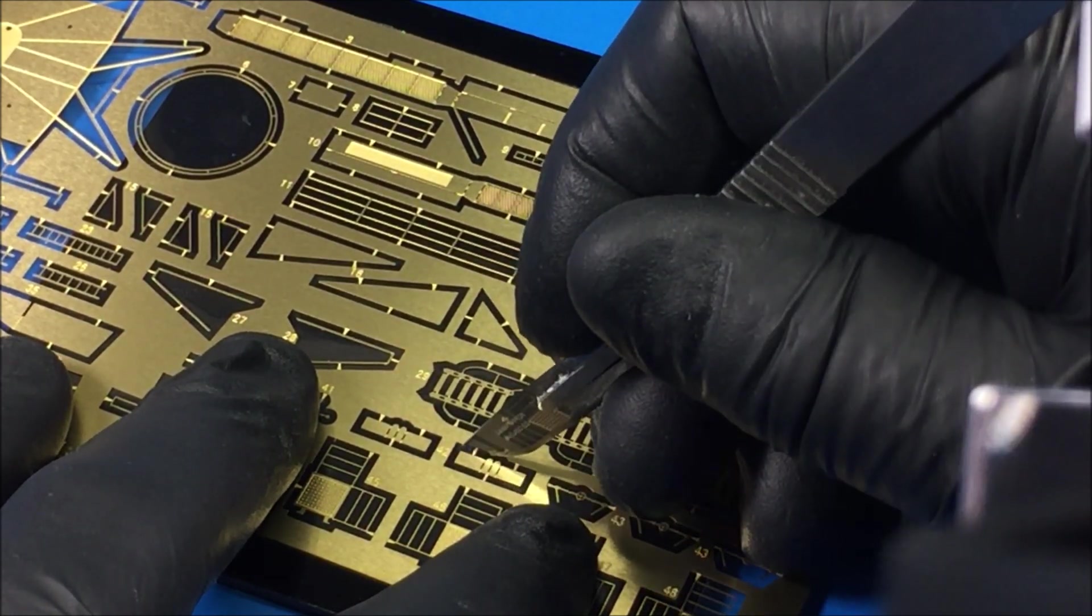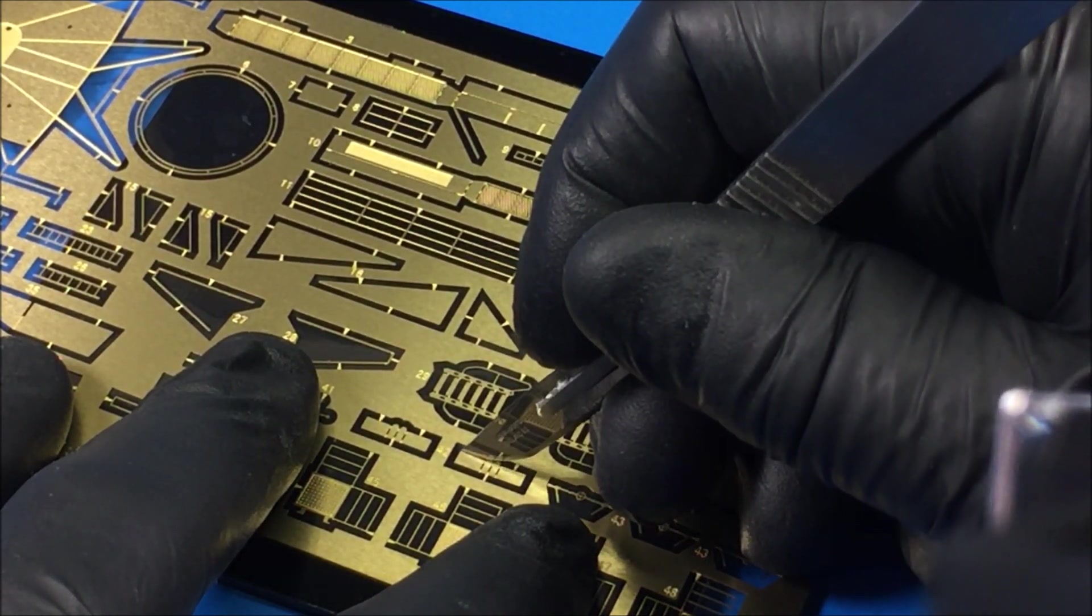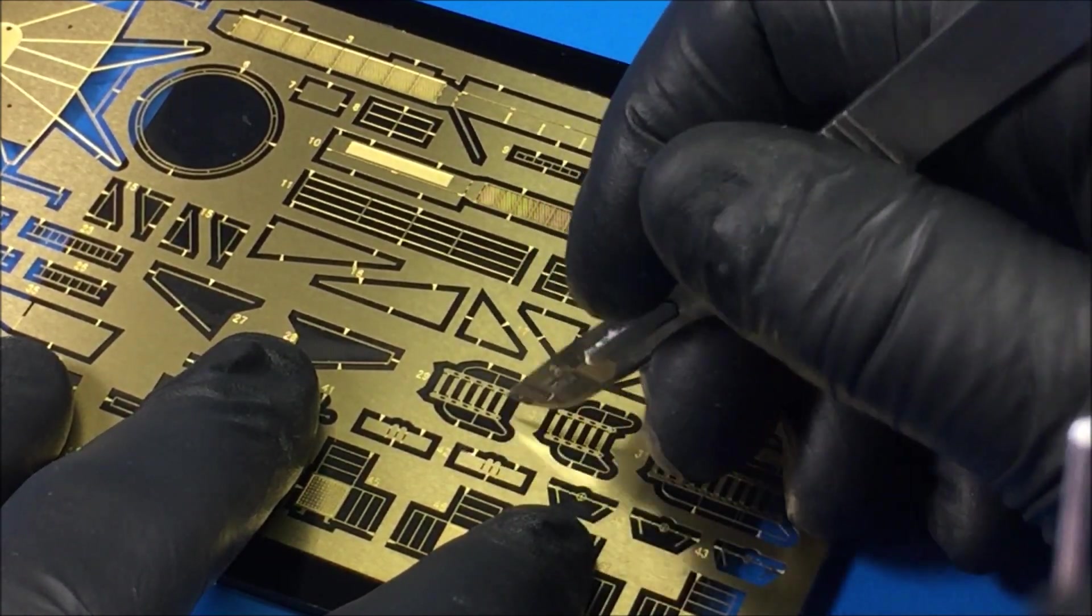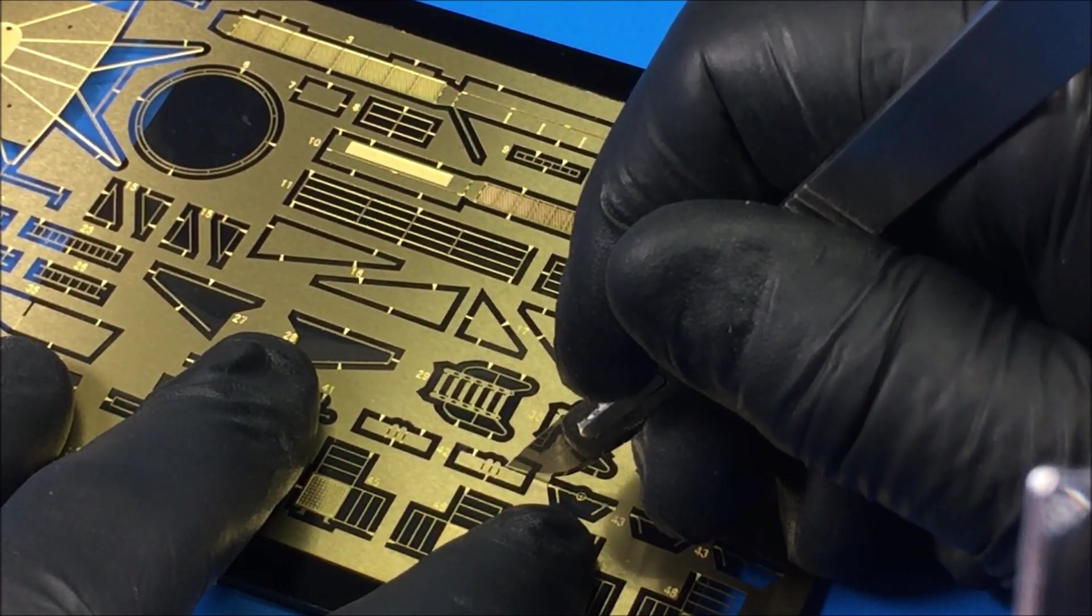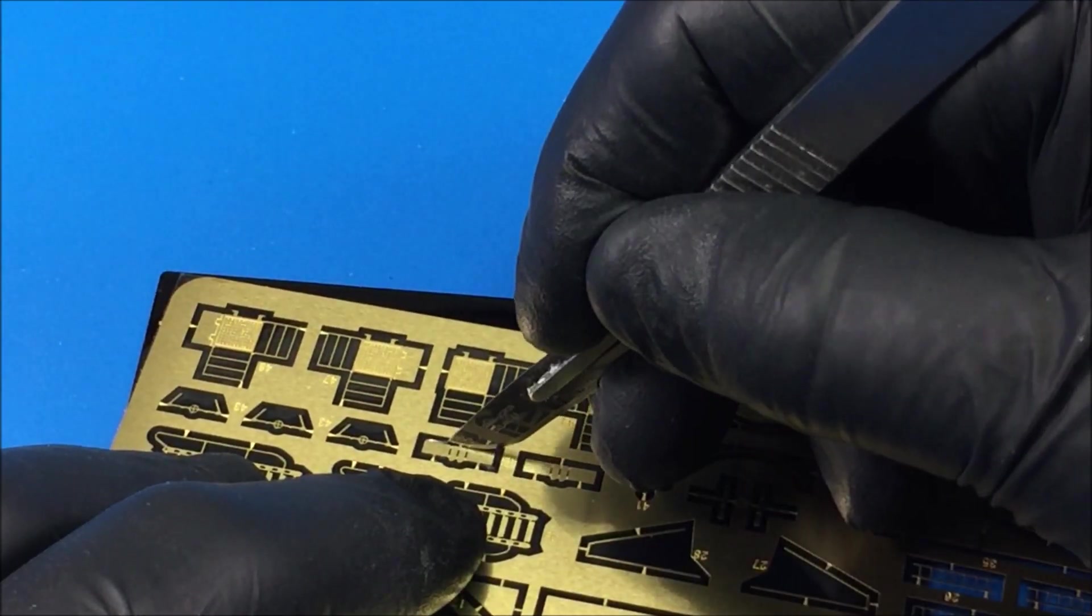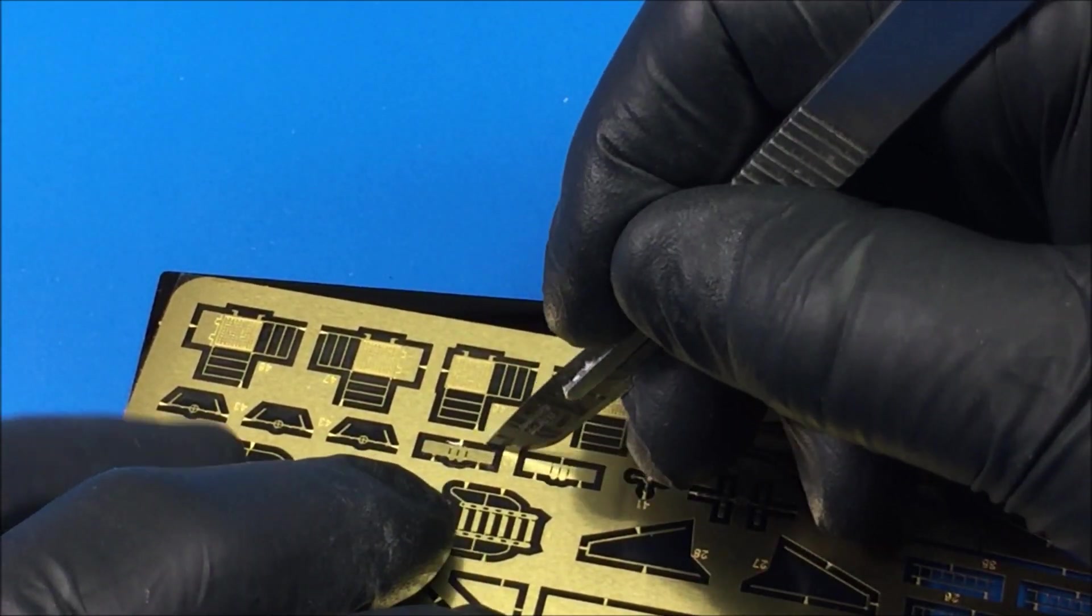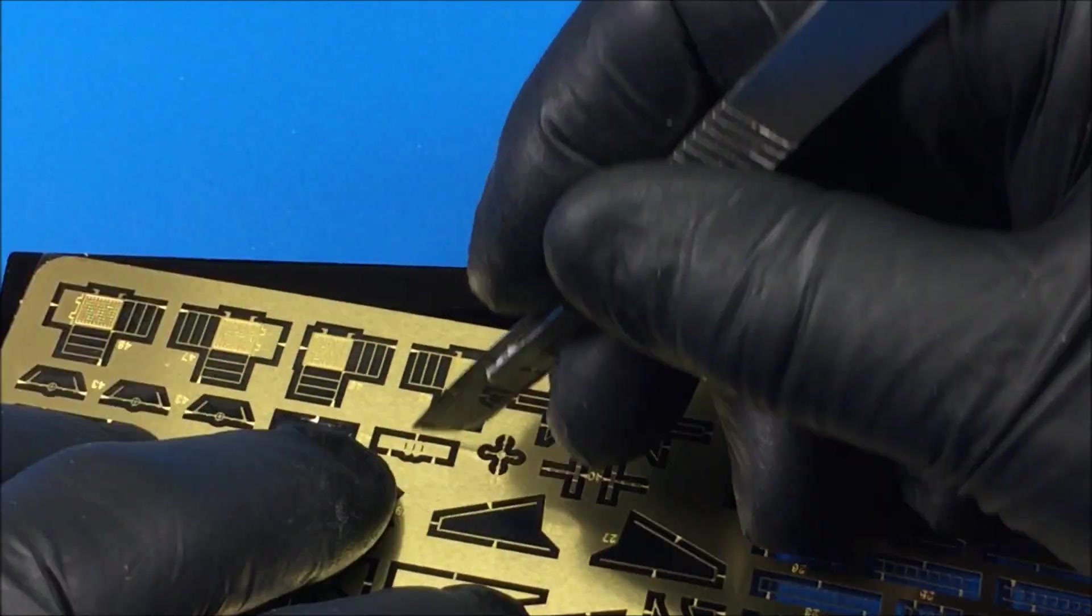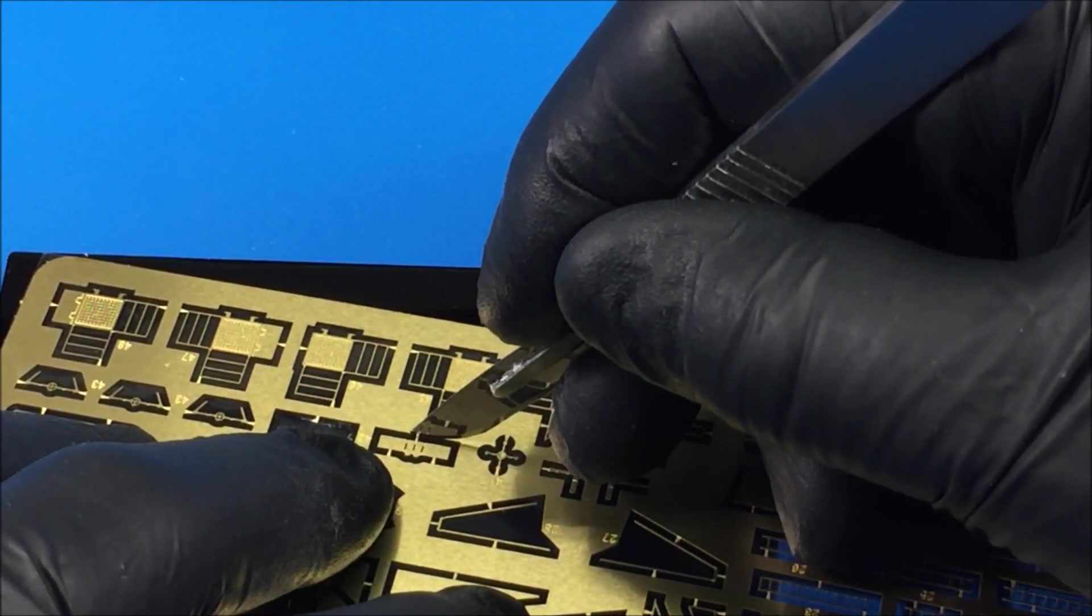I've got this black acrylic back here that makes it a little easier to see the photo etch fret carriers, so when you're cutting them it's a little more accurate where you're placing your knife. What you want to do is get in as close as you can.